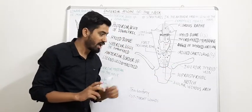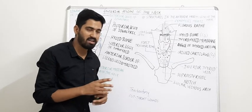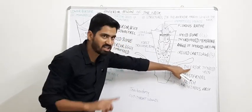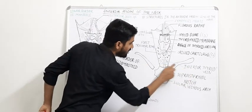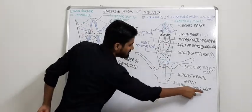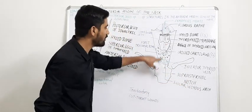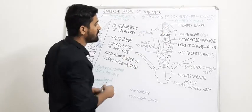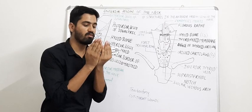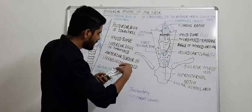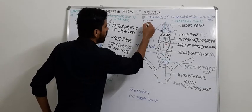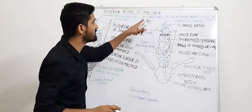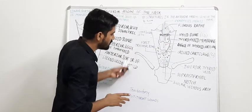After the isthmus, the last structure is the suprasternal notch. Just before the suprasternal notch, there is the inferior thyroid vein. There is also a superior thyroid vein and a middle thyroid vein, which will be covered in the thyroid gland topic. There is also the jugular venous arch. The upper border of the thyroid cartilage is considered a structure in the anterior midline of the neck because the thyroid cartilage is somewhat wider, and this anterior midline region is only two to three centimeters wide.